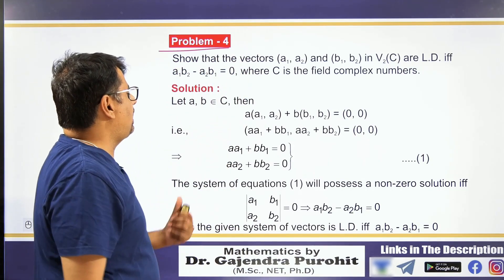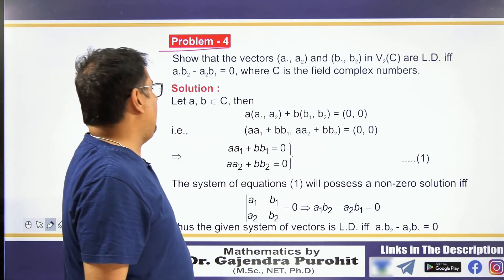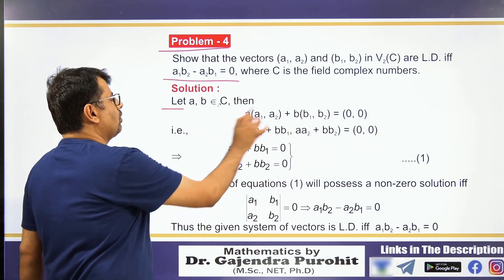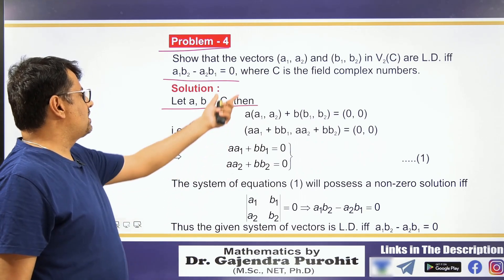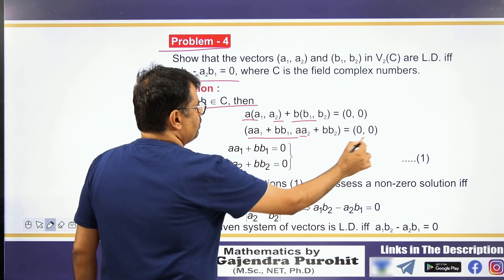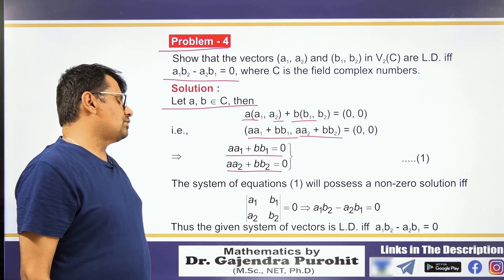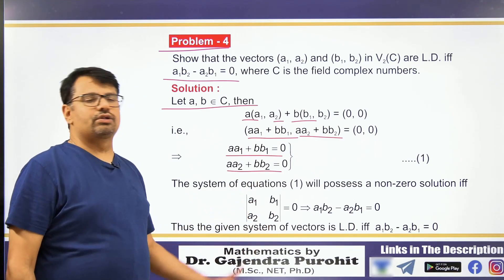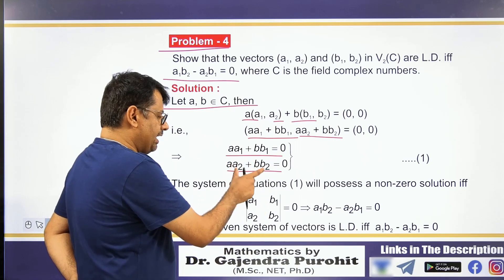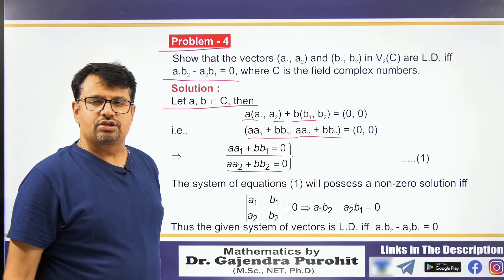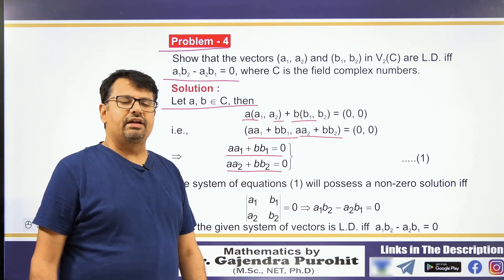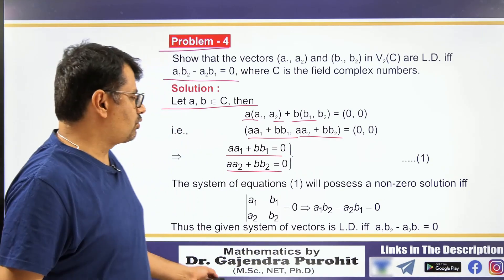Problem 4: Show that the vectors (A1, A2) and (B1, B2) of V2(C) are linearly dependent if and only if A1·B2 − A2·B1 = 0, where C is the field of complex numbers. We take scalars A and B from the field and form the linear combination A·(A1, A2) + B·(B1, B2) = 0. We make the matrix and compute its determinant. If the determinant is 0, the rank is less than 2. Thus the vectors are linearly dependent if and only if A1·B2 − A2·B1 = 0.